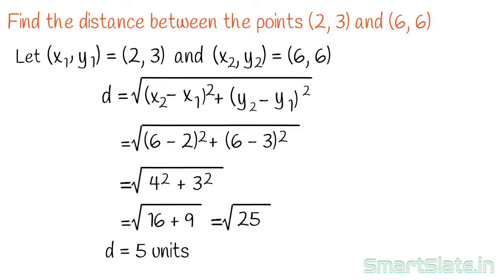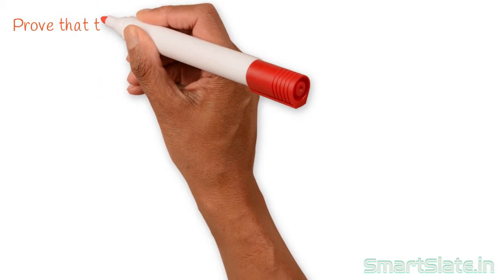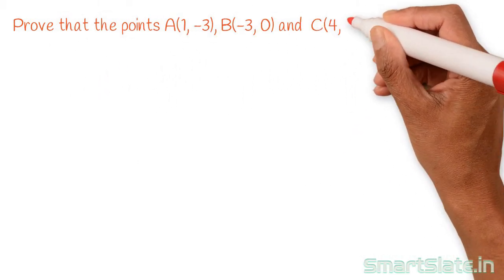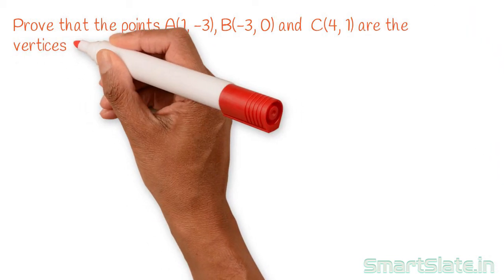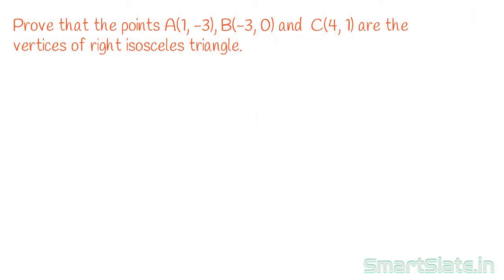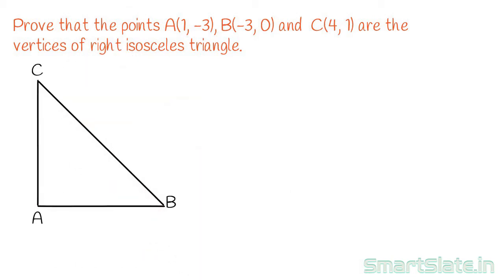Let's solve another problem: prove that the points A(1, -3), B(-3, 0) and C(4, 1) are vertices of a right isosceles triangle. An isosceles triangle has two equal sides. If we prove the distance between any two sets of points is equal, then we can say these points form an isosceles triangle.